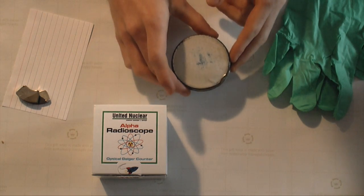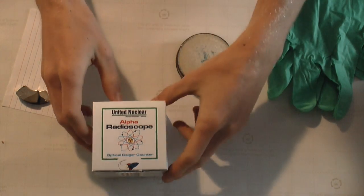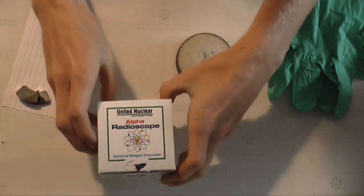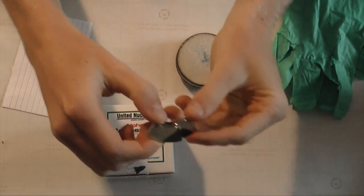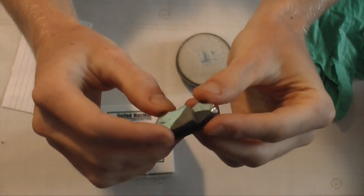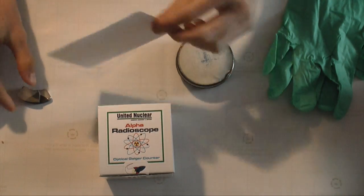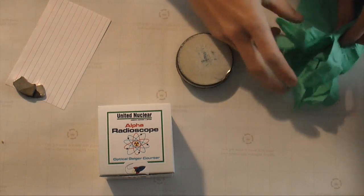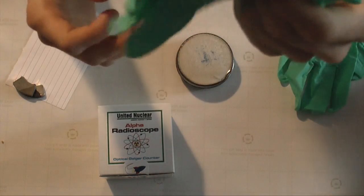All right, so we have our americium-241 source, an alpha radioscope with zinc sulfide screen so we can watch it, a neodymium magnet so we can hopefully change the path of the alpha particles a little bit, just a card piece of paper, and some gloves so we don't poison ourselves.